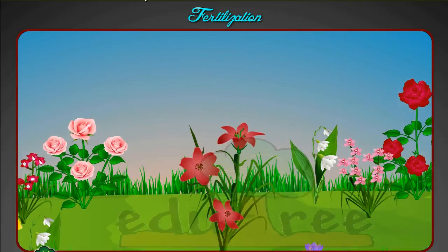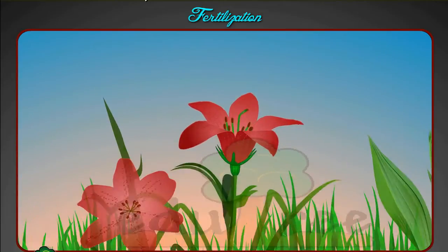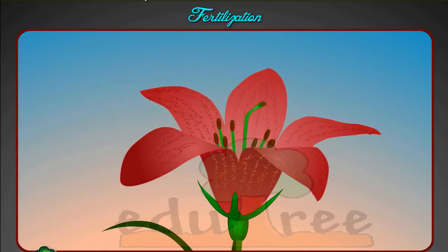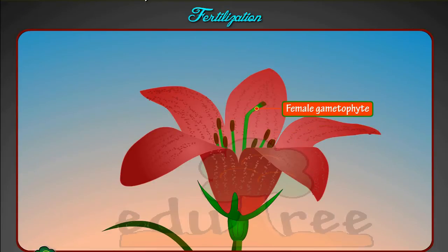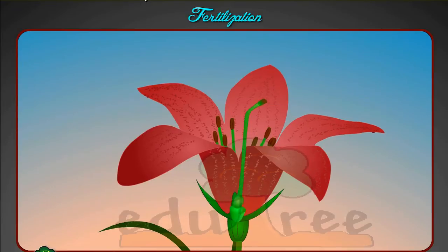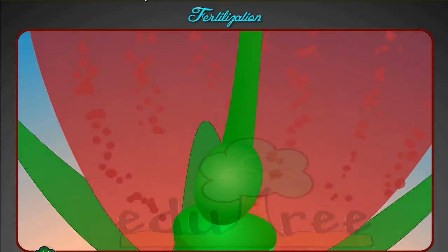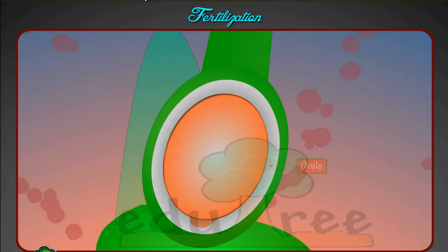Plants undergo a unique reproductive process where there are two fertilization events. This double fertilization event occurs between the male reproductive organ, the male gametophyte, and the female reproductive organ, the female gametophyte. Before the fertilization event can occur, the ovule has to undergo some changes.